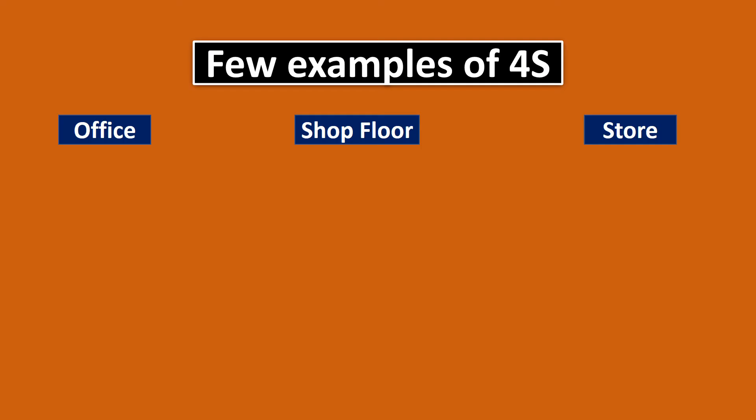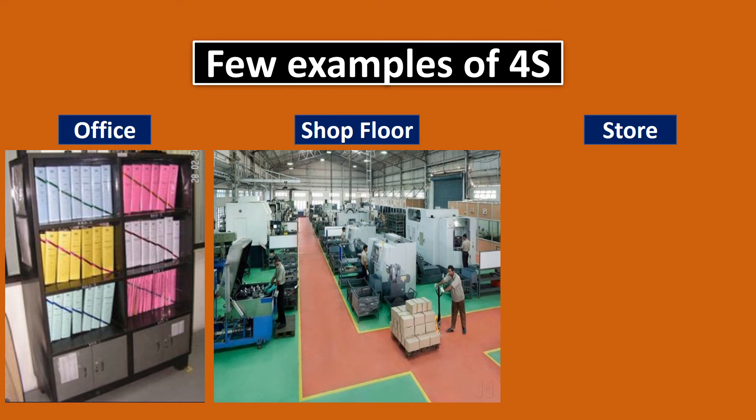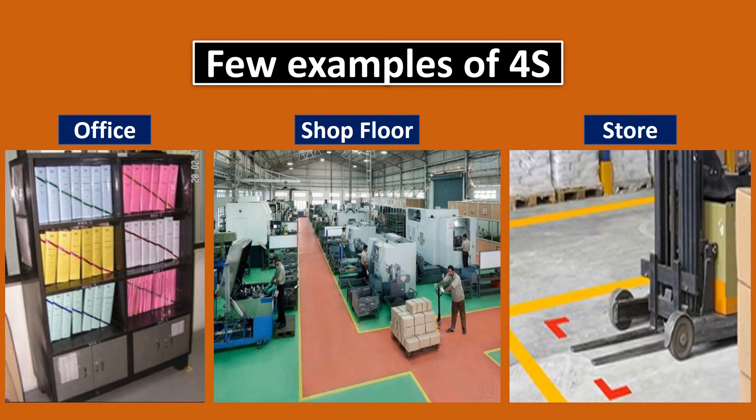Here are a few examples of 4S. This is an office file cabinet — if one file is missing, the line will be disturbed. On the shop floor, you can see the gangway is very clear and materials are kept in their proper places. In the store, a forklift is kept in its proper designated place.